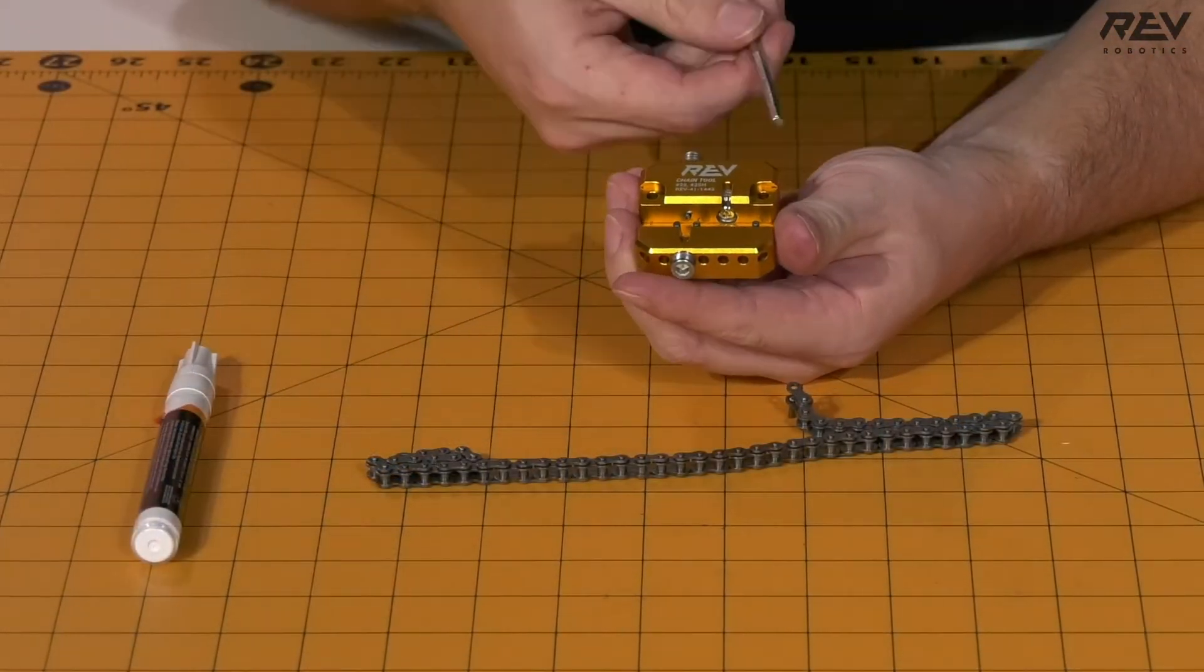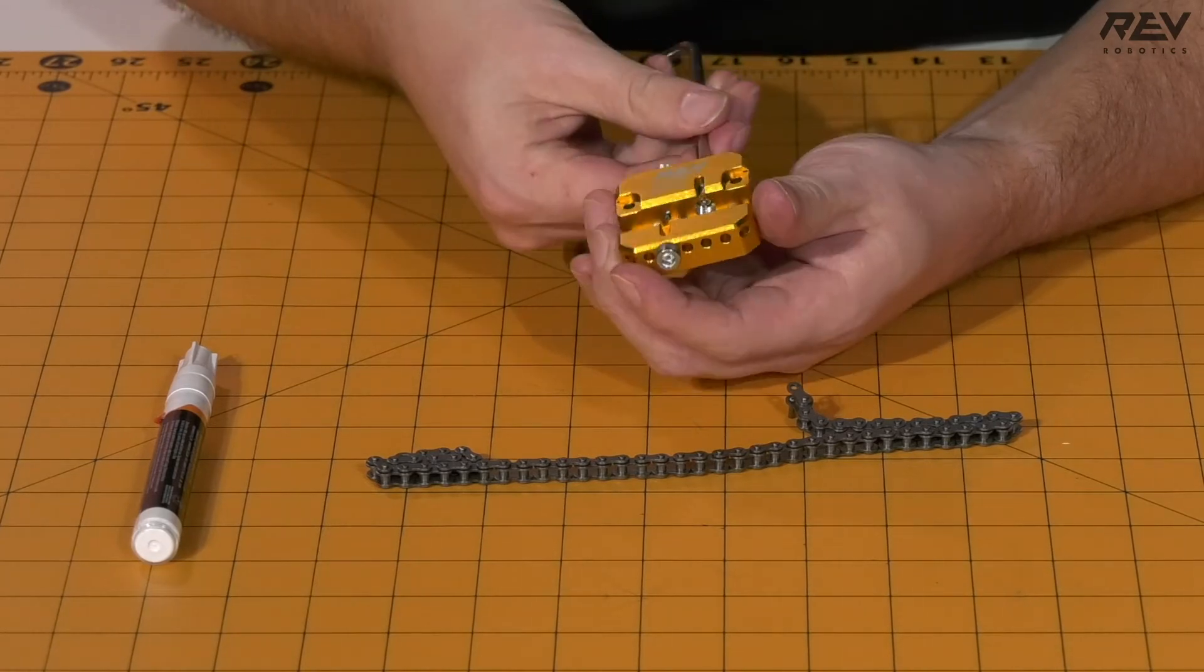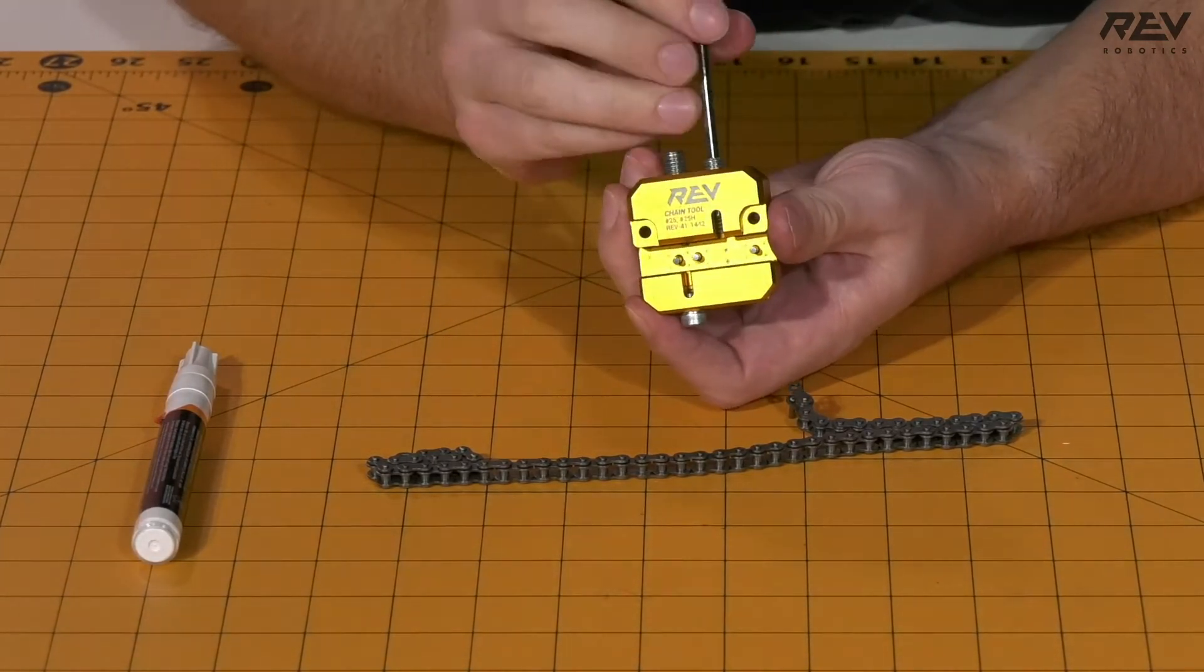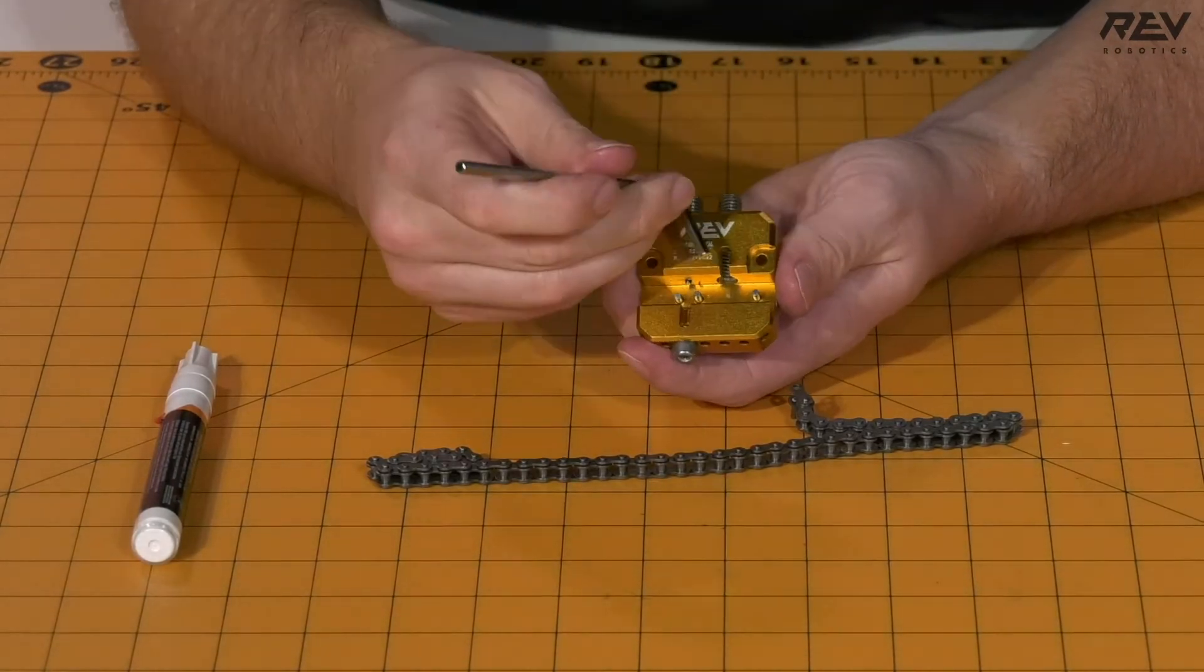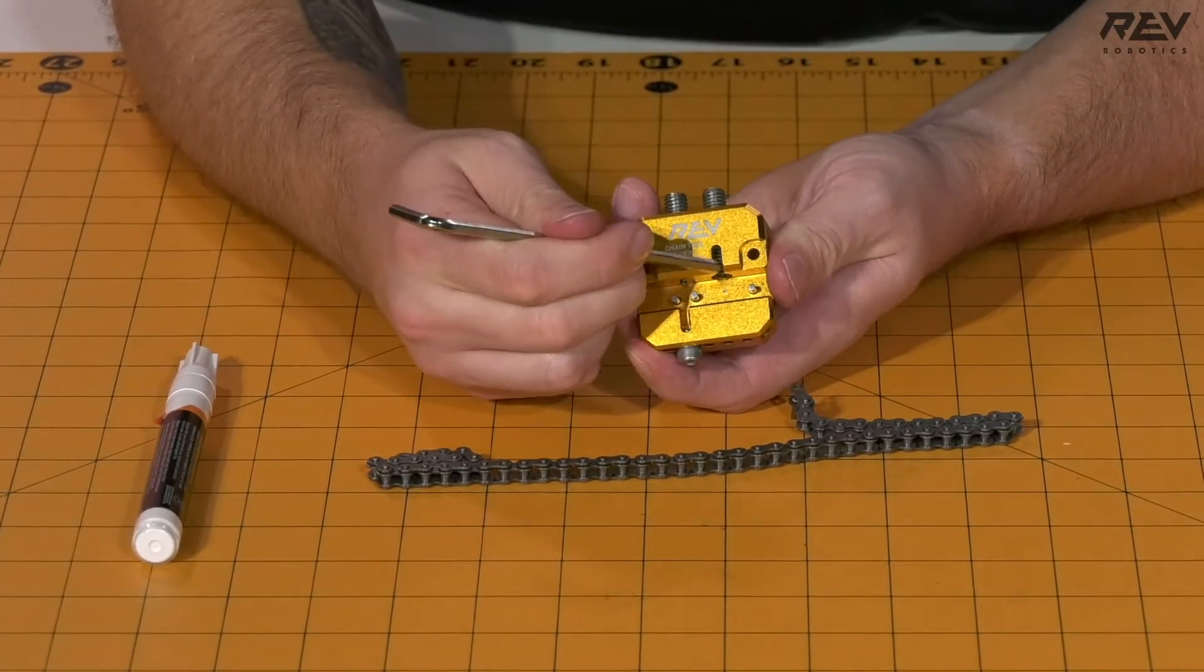So what we're going to want to do is we're going to go back and we're going to want to drive these all the way out of the way. So this cup point screw that we're unscrewing right now, we're going to put the chain link into this guide here to be able to press that pin back into the chain.